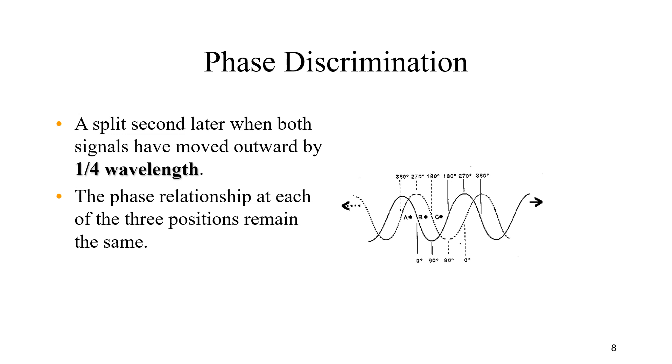Each station pair, the master and the slave, produces a hyperbolic line of position. The range of the system is typically about 440 nautical miles by day and 240 nautical miles by night.